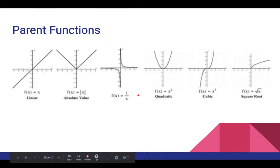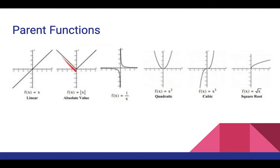Parent functions. Each of these parent functions you need to be familiar with. You do not have to sketch them dot by dot, but you do need to know the general shape of each function. We have: the linear function f of x equals x; the absolute value function f of x equals absolute value of x; the reciprocal function f of x equals 1 over x, which is undefined at x equals 0; the quadratic function f of x equals x squared, which looks like a parabola; the cubic function f of x equals x cubed, which inverts for x less than 0 because negative values raised to an odd power give negative outputs; and the square root function f of x equals square root of x.